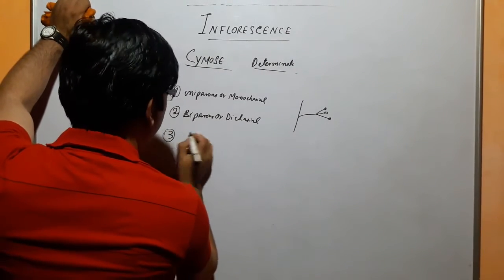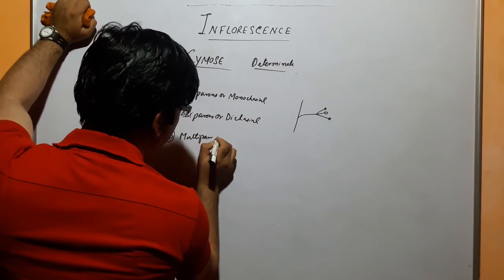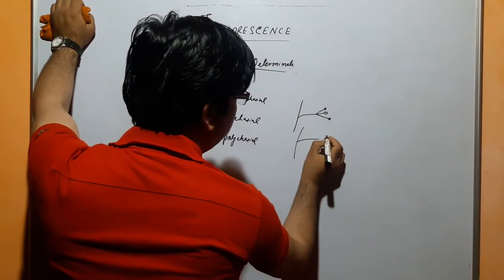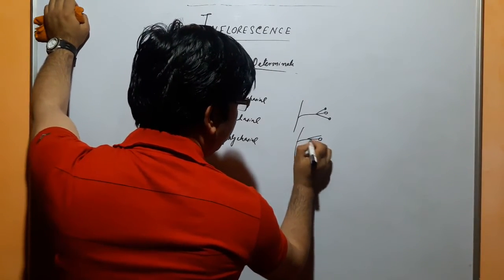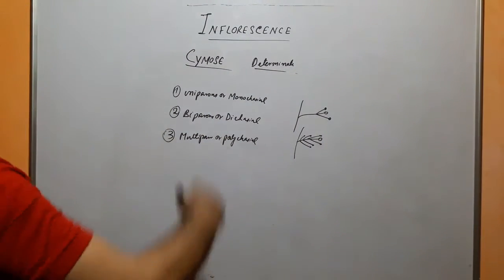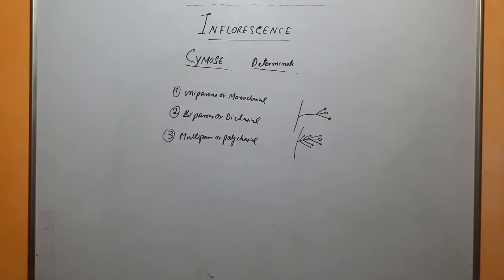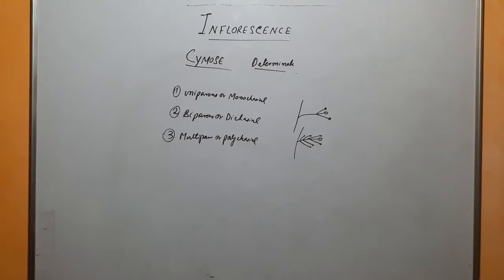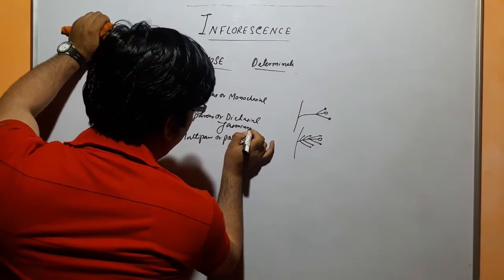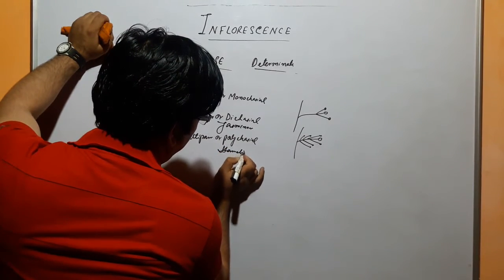And dichasial. Multi-parous or polychasial — in this case, the growth is stopped, then there are many branches, not one but many, and again the flower growth is stopped. So we have three important types. In case of biparous we have Jasminum and Hamelia plant.